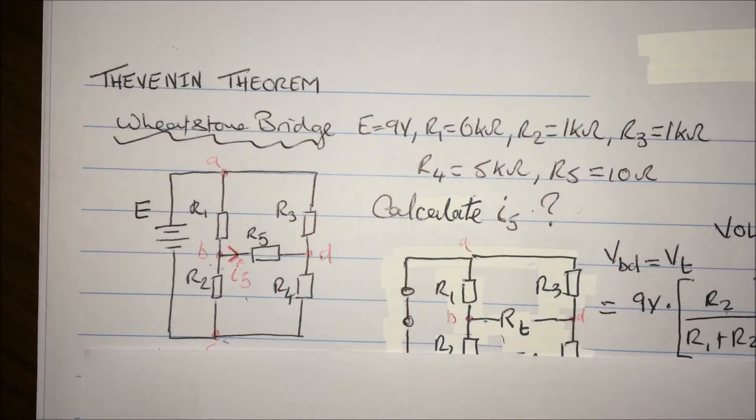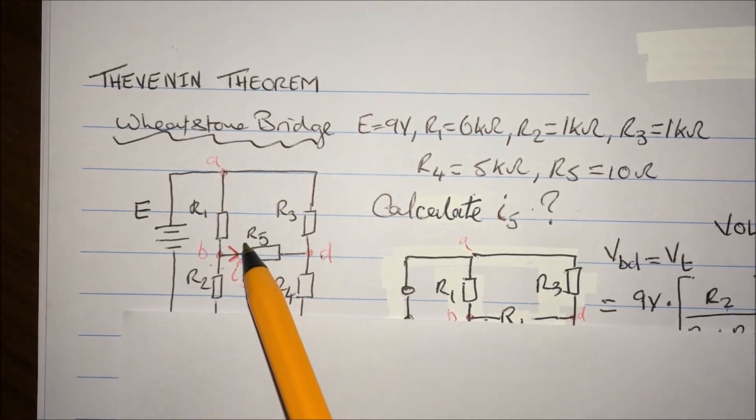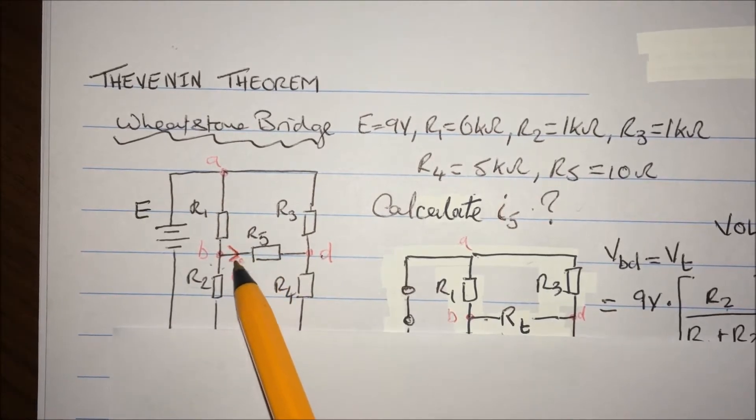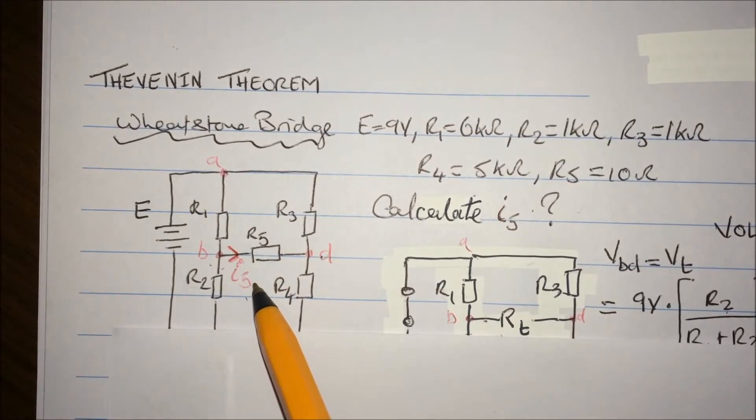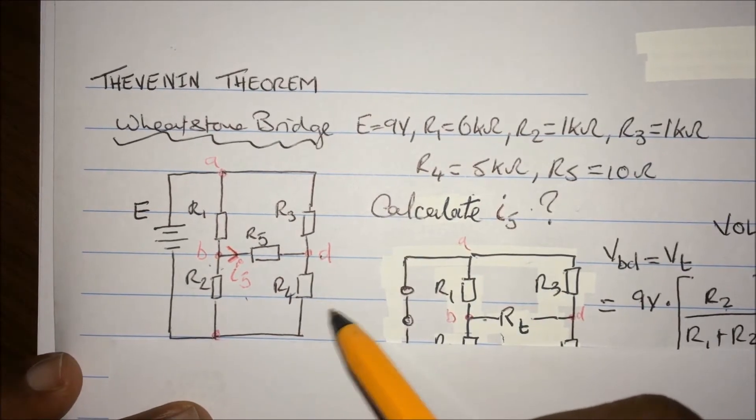Hey, hi guys, just trying to do using the Thevenin theorem to calculate that Wheatstone bridge current here, which is I5 mentioned, according to that rough drawing there.